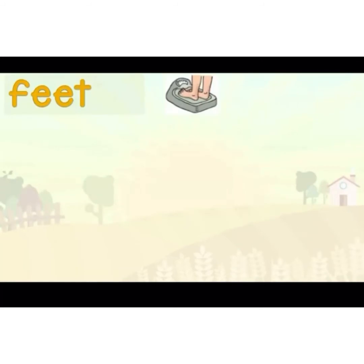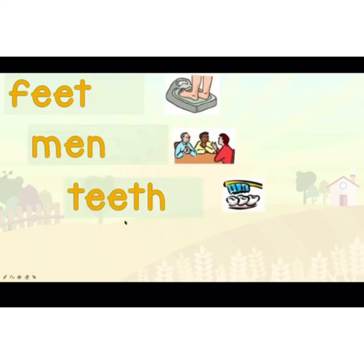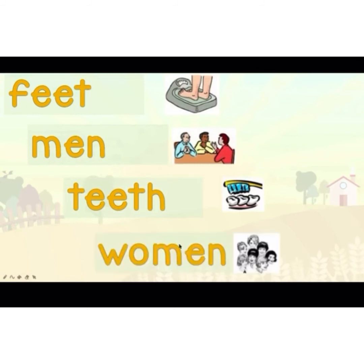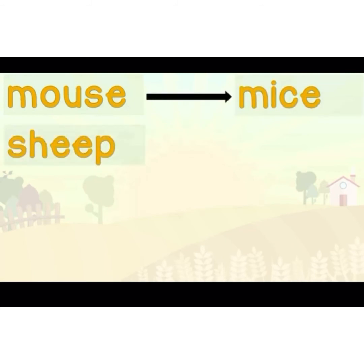Let's review — feet: two kaki kita panggil feet. For irregular nouns, awak memang kena hafal sebab dia tak boleh tambah 's' atau 'es' — dia tetap sama. Kena hafal: men, feet, tooth/teeth, women — kalau satu perempuan: w-o-m-a-n woman.